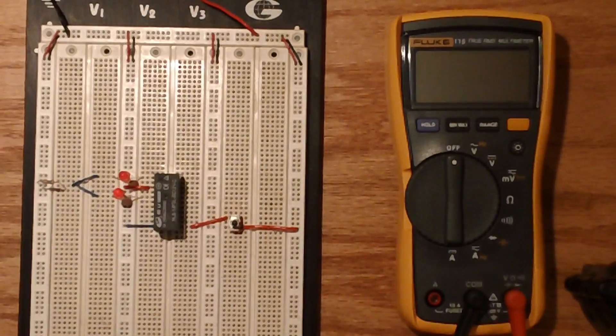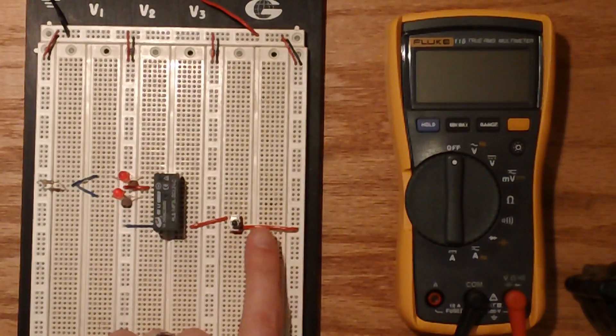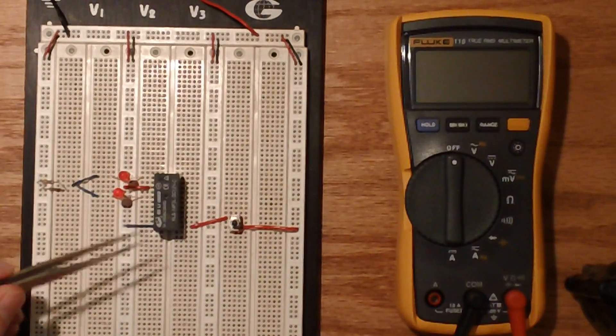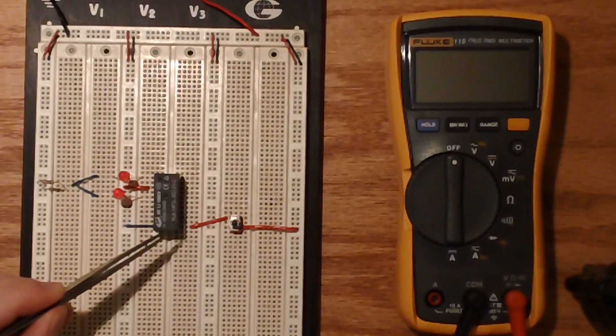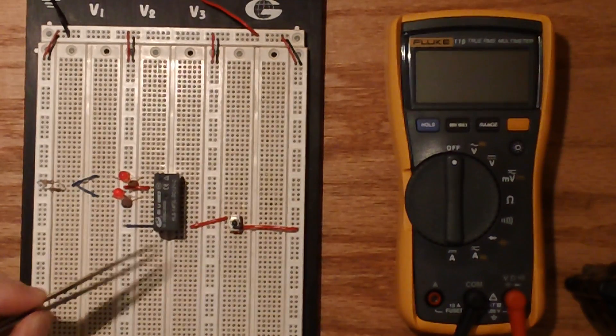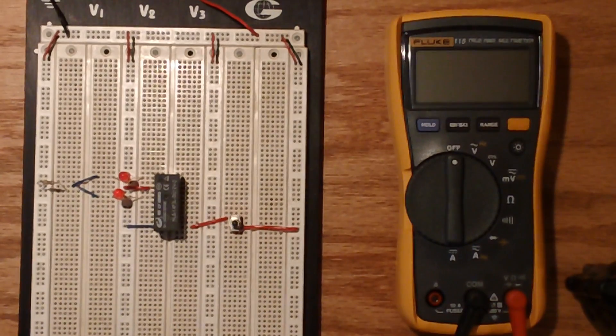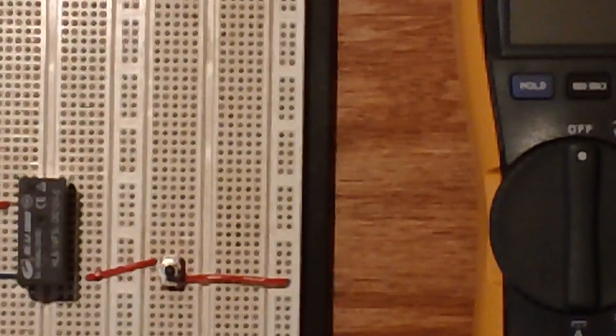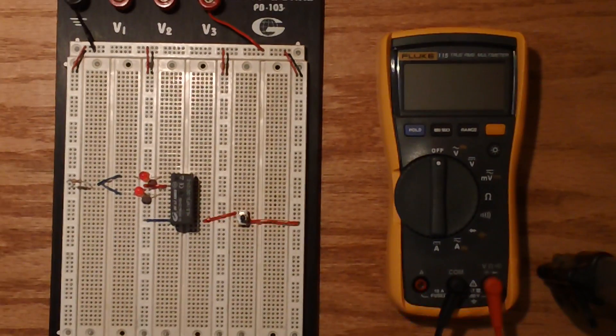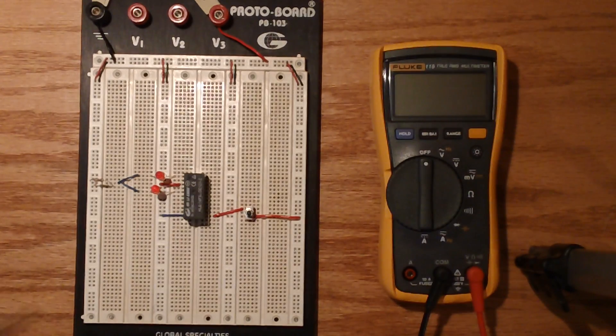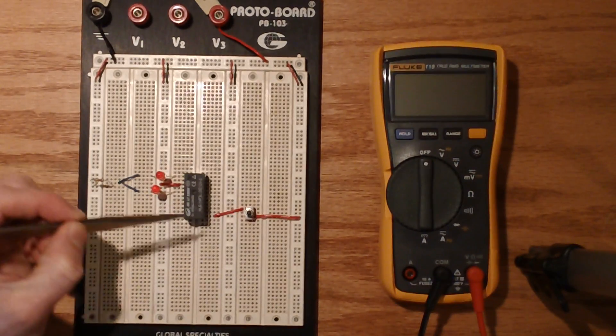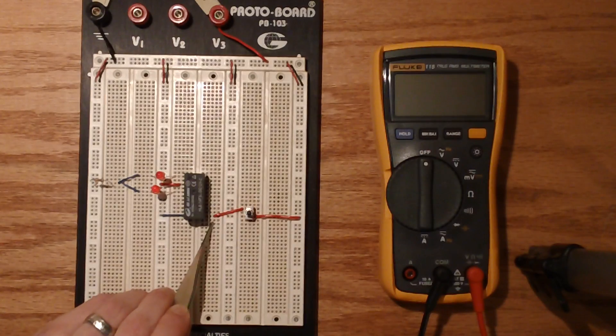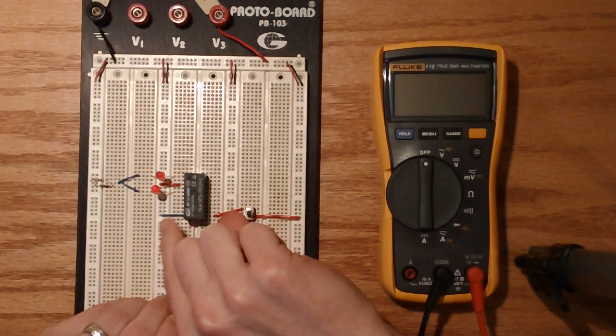So what's going on here is when we push this button and the current flows through the switch and goes to the input pin of our relay. By the way, I happen to be curious if I could find the data sheet for this guy and this one was a little bit difficult. I'm not sure if we are zoomed in enough here.